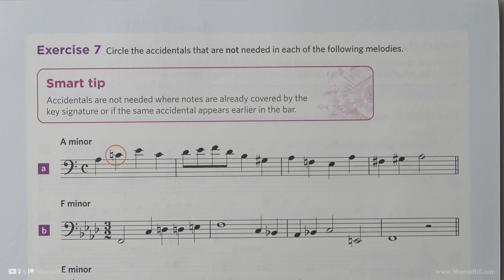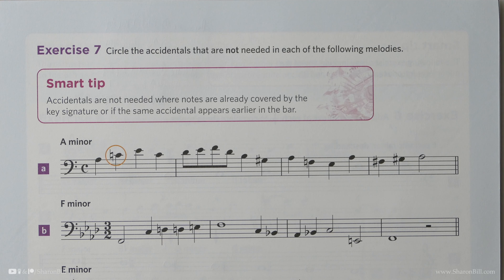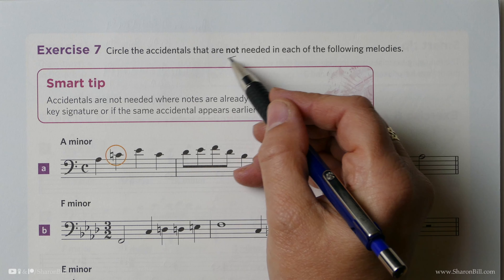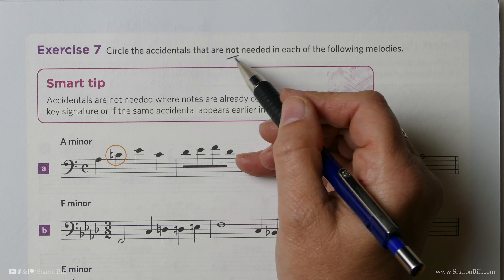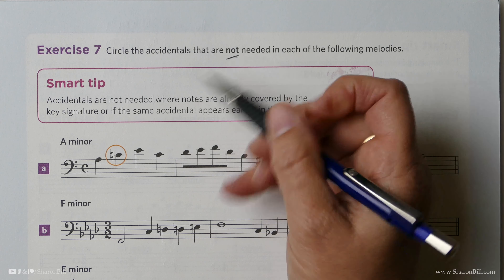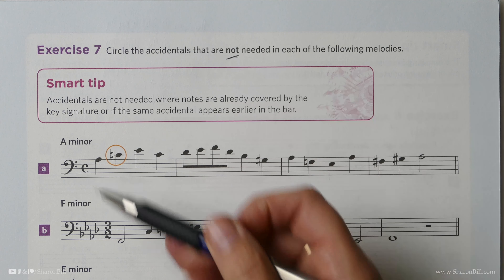Let's turn now to page 36 of the Grade 3 Discovering Music Theory workbook. We move on to Exercise 7, still discussing the topic of minor scales and minor keys. In Exercise 7, we need to look and see which accidentals are not needed — which accidentals are not appropriate to these minor scale pieces of music.